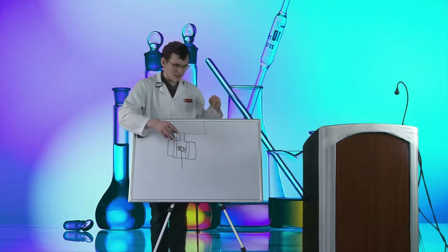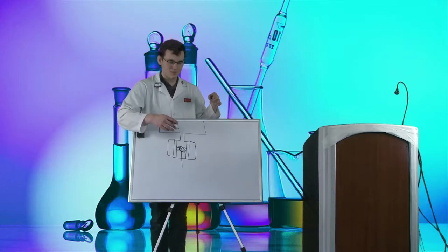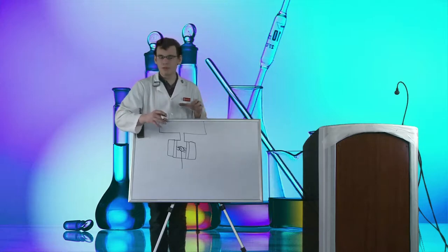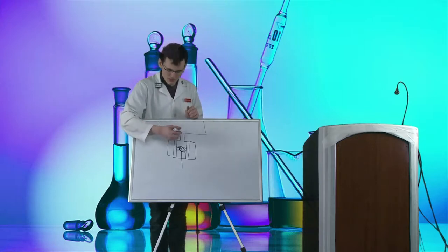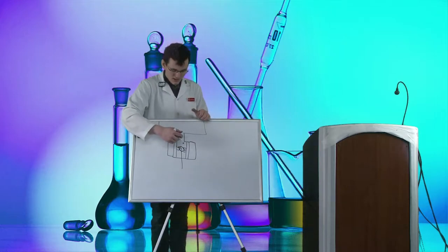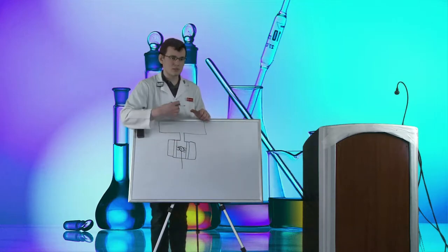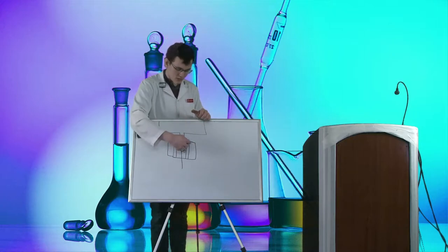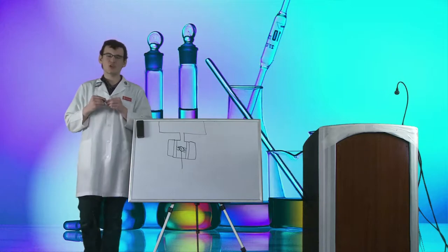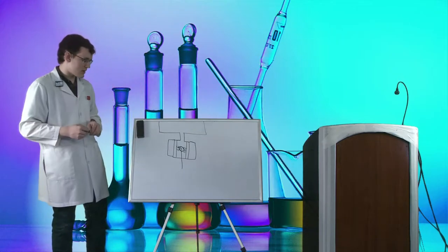We've talked about two types of vacuum gauges: ones that use temperature — the thermocouple and Pirani gauges — and ones that use ions — the Penning and hot cathode gauges. There are many other types: turbo molecular drag gauges, baratron gauges, and others — we could spend a day talking about them. But the ones we've covered here are the most common and are the ones we use in our lab.